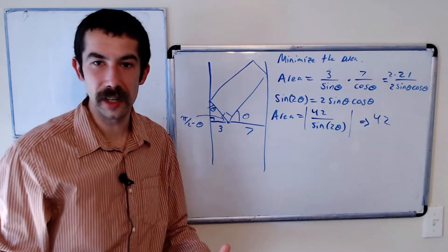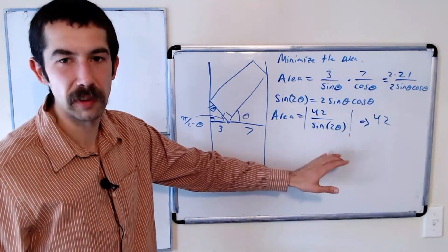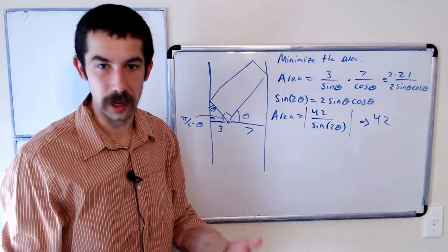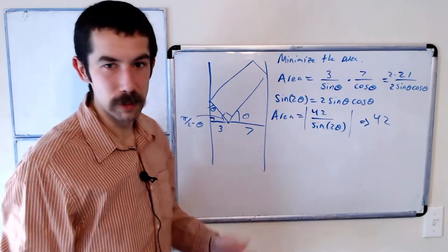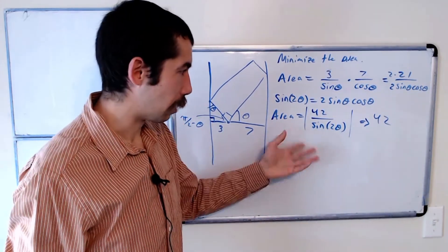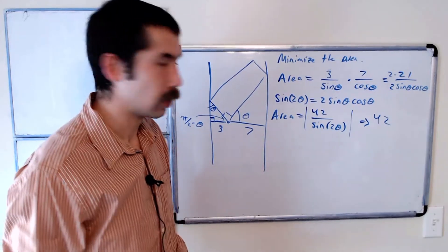Okay, you could have also done this with calculus. We could have taken the derivative of this function, set it equal to 0, and you would have found that theta—our area is minimized when theta equals pi over 4, and we would get an area of 42.